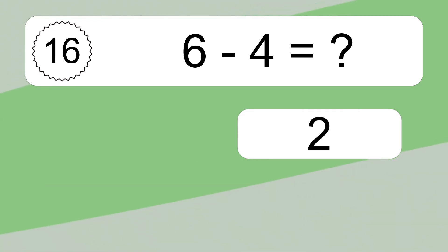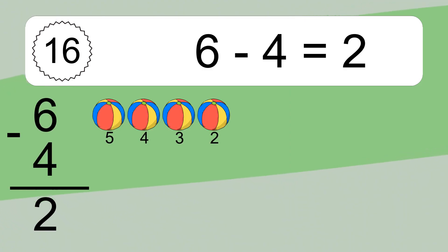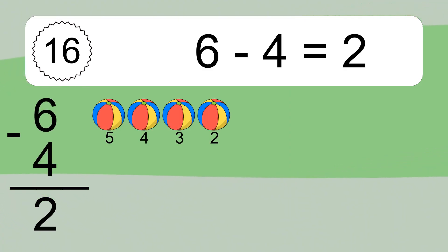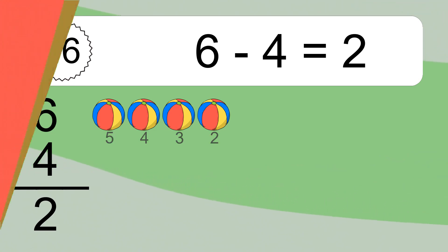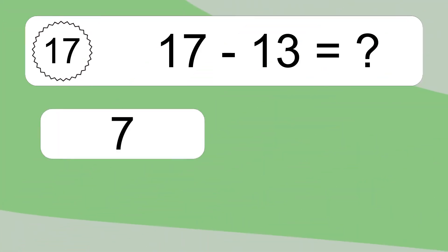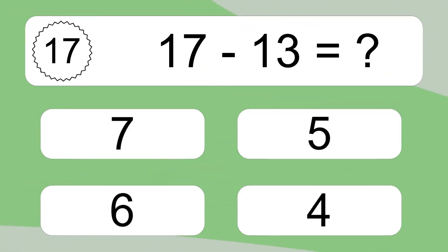6 minus 4 equals what? 6 minus 4 equals 2. Let's count it: 5, 4, 3, 2.